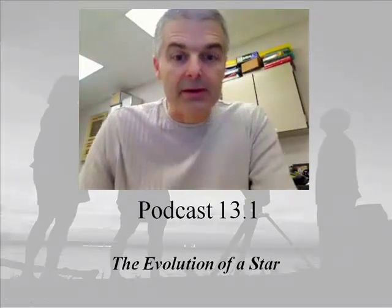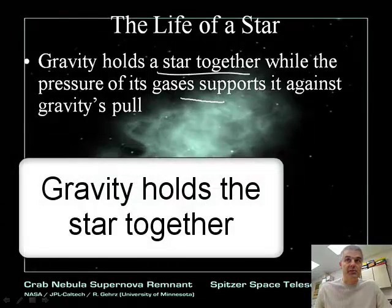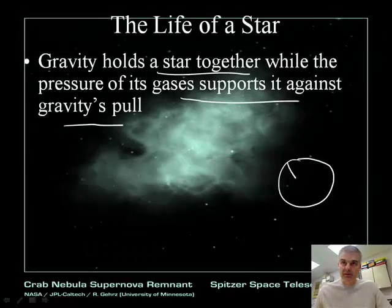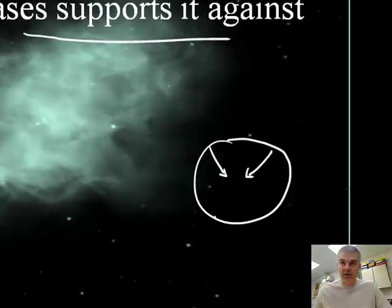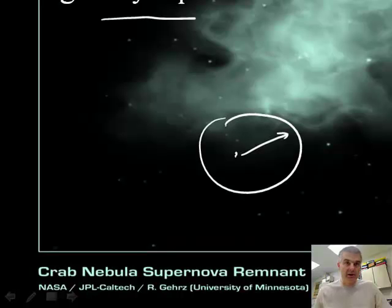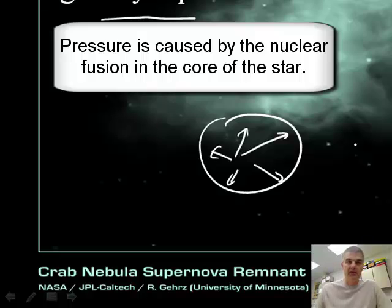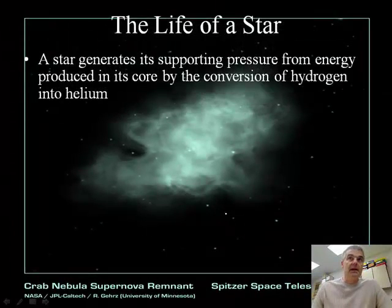As we talk about the life cycle of a star, the key thing that holds everything together is gravity. Gravity holds the star together while the pressure of its gases supports it against gravity's pull. Gravity — the attraction of atoms for each other — causes it to be held together, and the internal pressure of its gases pushes outward. We call this balance hydrostatic equilibrium.